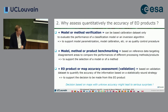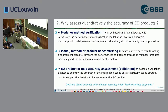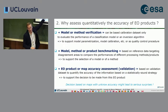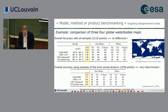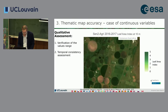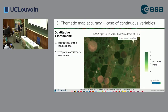We will address overall map accuracy assessment in detail later. What we want to make sure is that you don't use model verification as an accuracy assessment, and you don't use accuracy assessment to figure out which method is the best-performing. Now let's talk about thematic map accuracy. We will start with continuous variables.